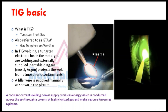The gas tungsten arc welding process is sometimes referred to as TIG or Heli-Arc. The term TIG is short for tungsten inert gas welding, and the much older term Heli-Arc was used because helium was the first gas used for the process. The aircraft industry developed the GTAW process for welding magnesium during the late 1930s. It is also called GTAW, which means gas tungsten arc welding.